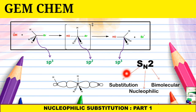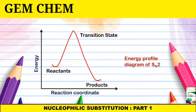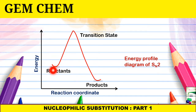In SN2: S stands for substitution, N stands for nucleophilic, and 2 stands for bimolecular — meaning two reactants are involved in the rate-determining step. Note that S and 2 are written at the same level, whereas N is written in subscript. The energy profile diagram for SN2 shows formation of only one transition state, and the product is at lower energy than the reactants since the product is more stable.